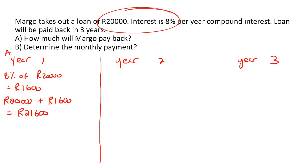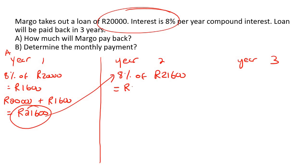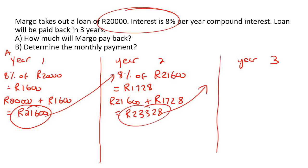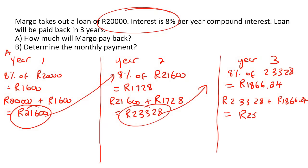For year number two, we will now use this amount over here. So we'll say 8% of 21,600, and that'll be 1,728. You add these two numbers together now, so 21,600 plus 1,728, and that'll be 23,328. And now that becomes your starting number for year number three. So we'll take 8% of 23,328, and that gives us 1,866.24. And so we add those two now, and that'll give us 25,194.24.